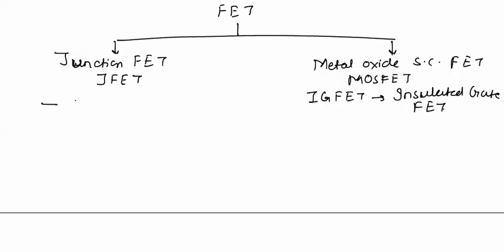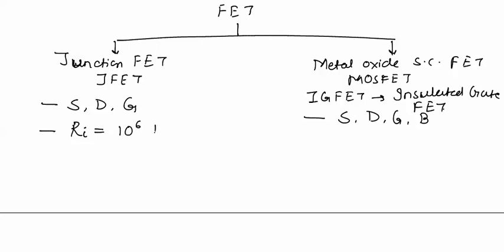In JFETs there are three terminals: source, drain, and gate. While in MOSFETs there are four terminals: source, drain, gate, and one additional terminal that is body. Junction field effect transistors have their input impedance in the range 10 to the power 6 to 10 to the power 8 ohms, while MOSFETs have their input impedance in the range 10 to the power 10 to 10 to the power 15 ohms.